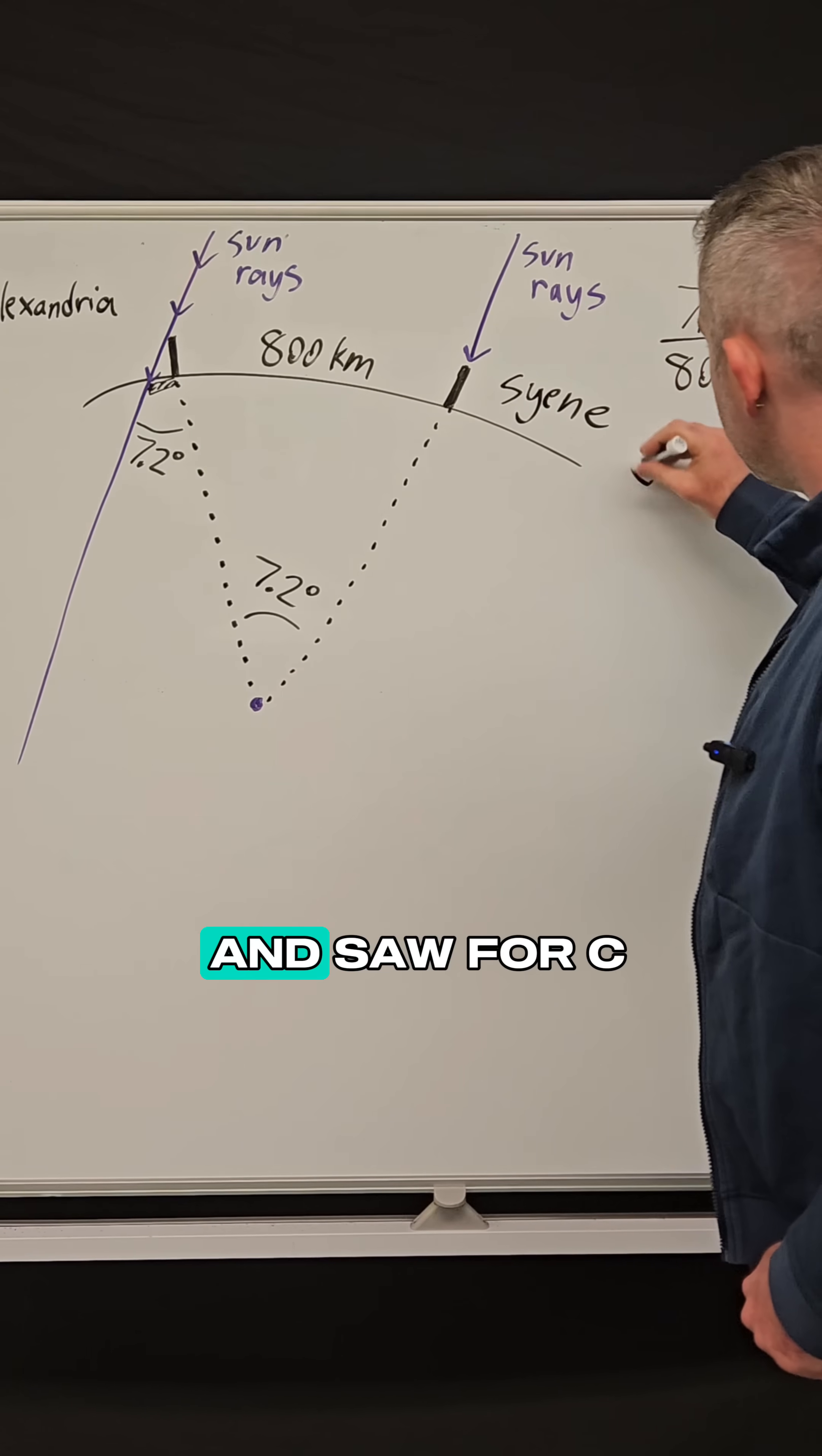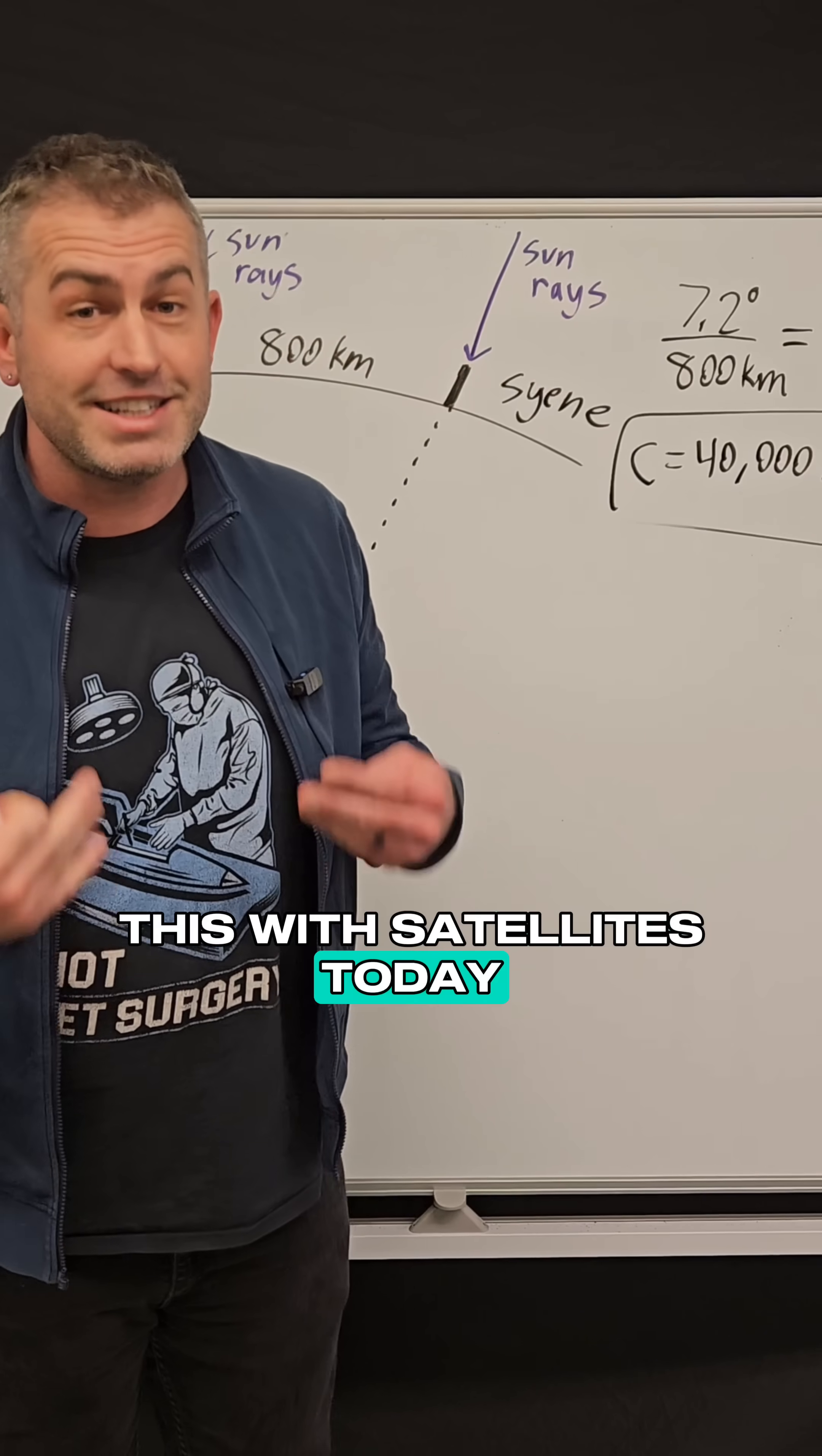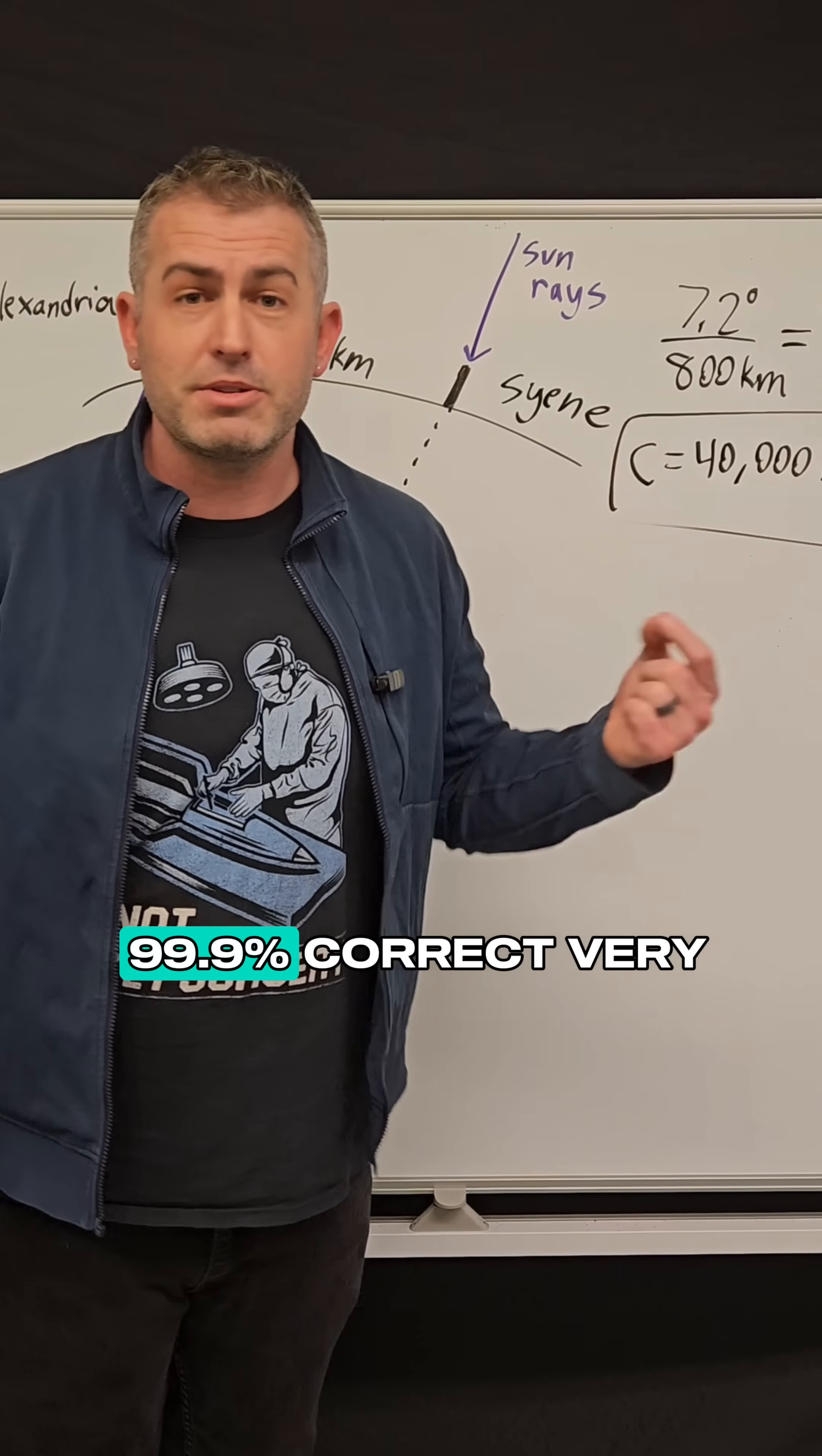And he did this and solved for C and got 40,000 kilometers and surprisingly this is extremely accurate. So when we verified this with satellites today this is only off by about 30 kilometers, so he was almost 99.9 percent correct.